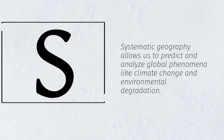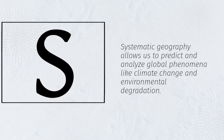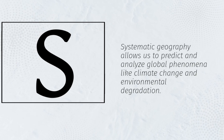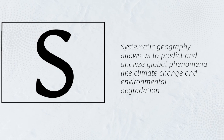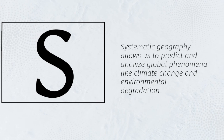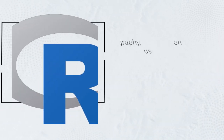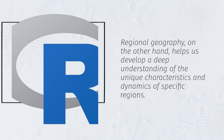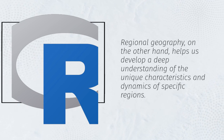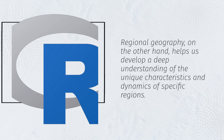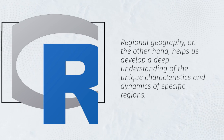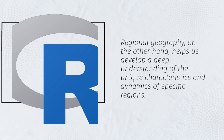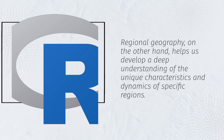Systematic geography allows us to predict and analyze global phenomena like climate change and environmental degradation. Regional geography, on the other hand, helps us develop a deep understanding of the unique characteristics and dynamics of specific regions.